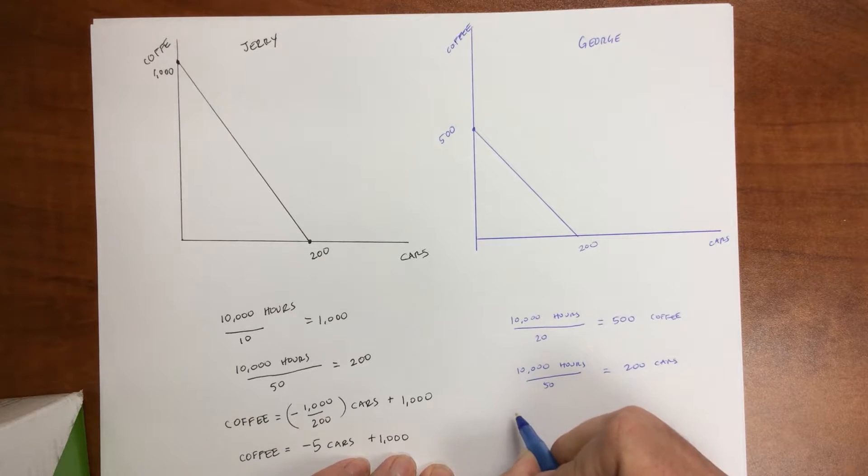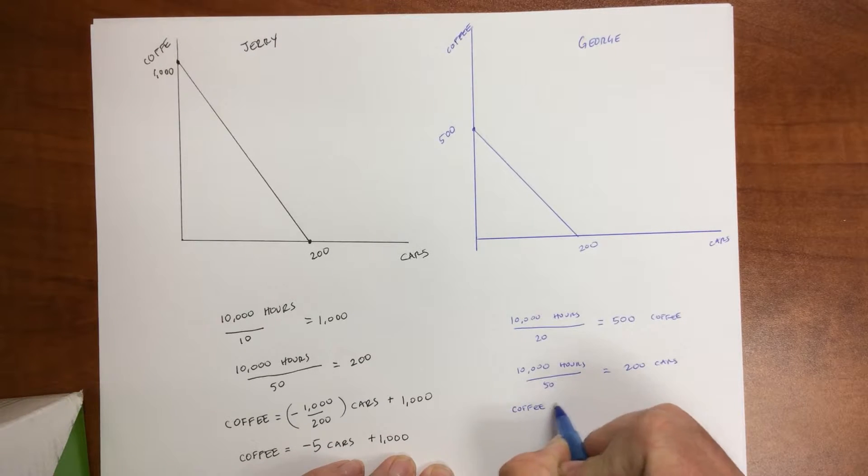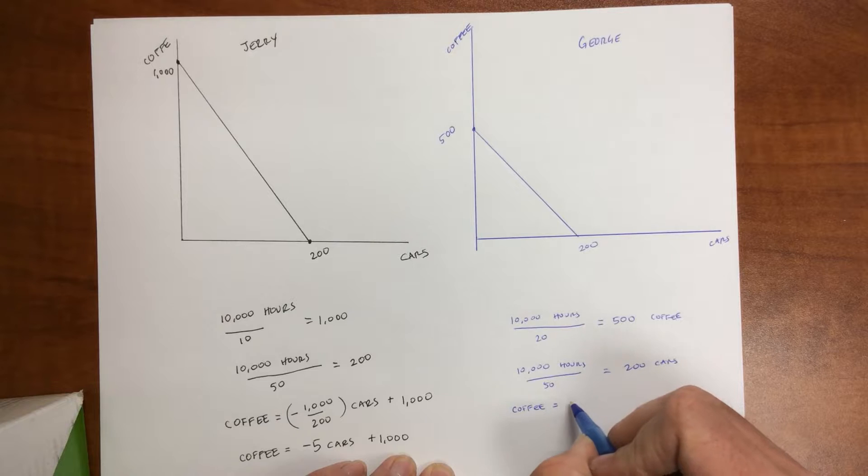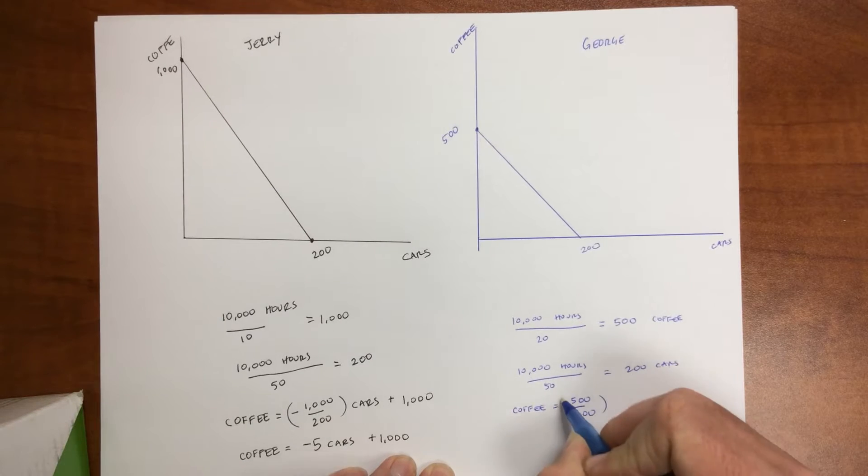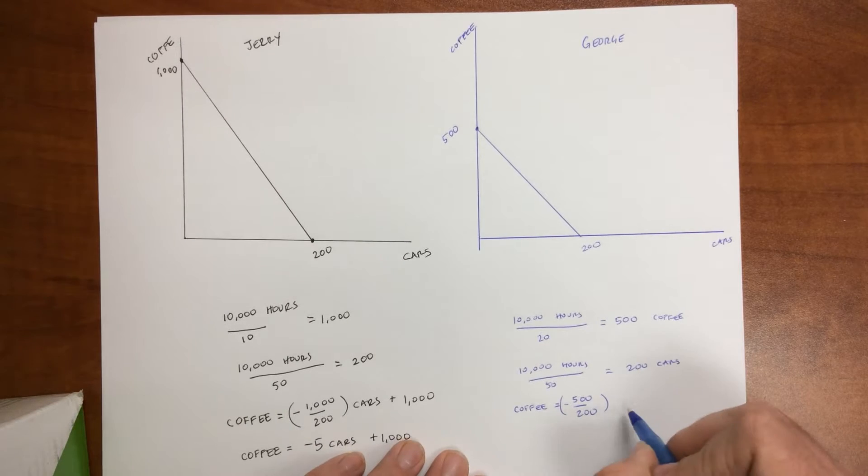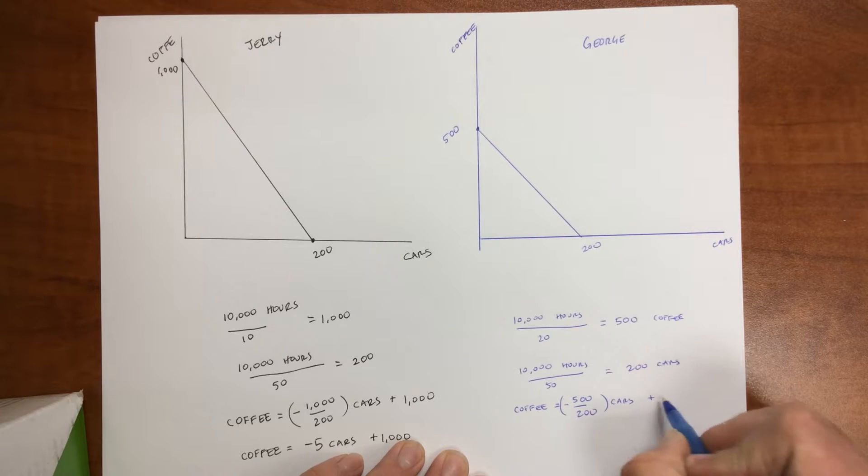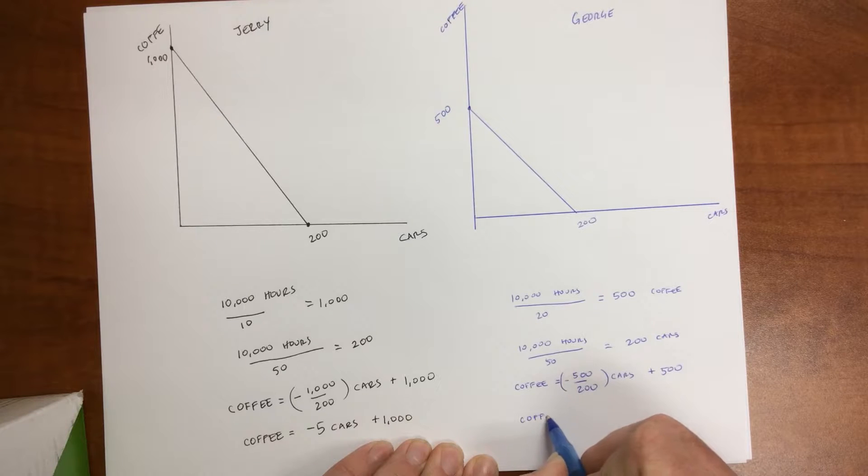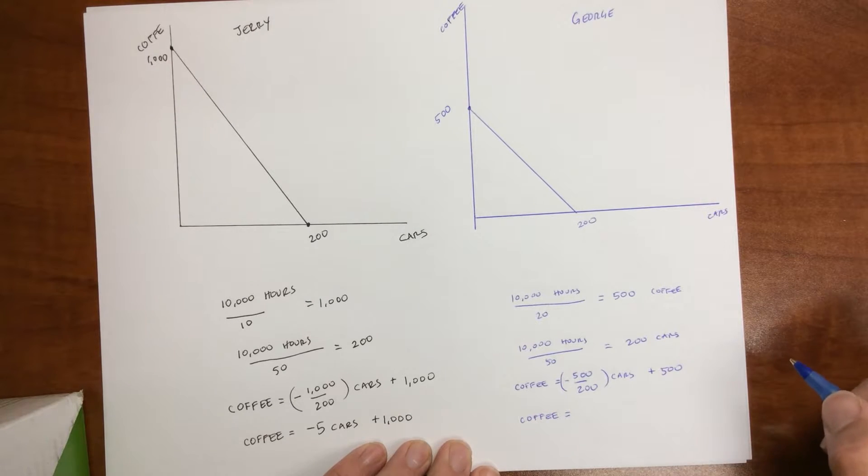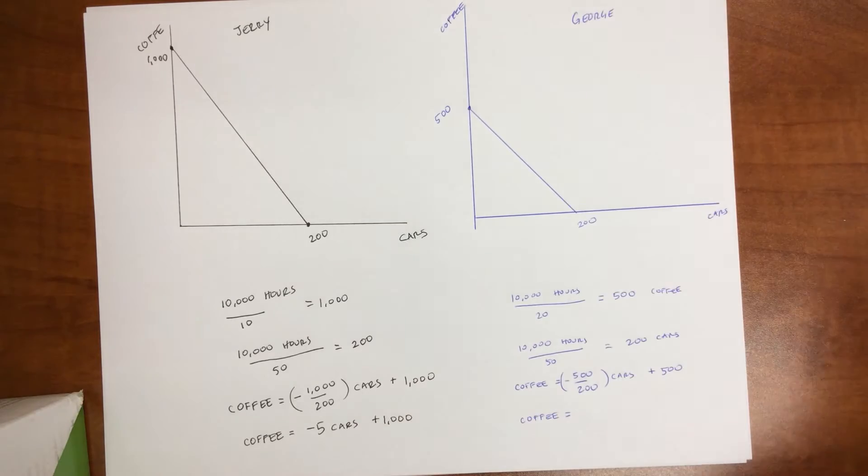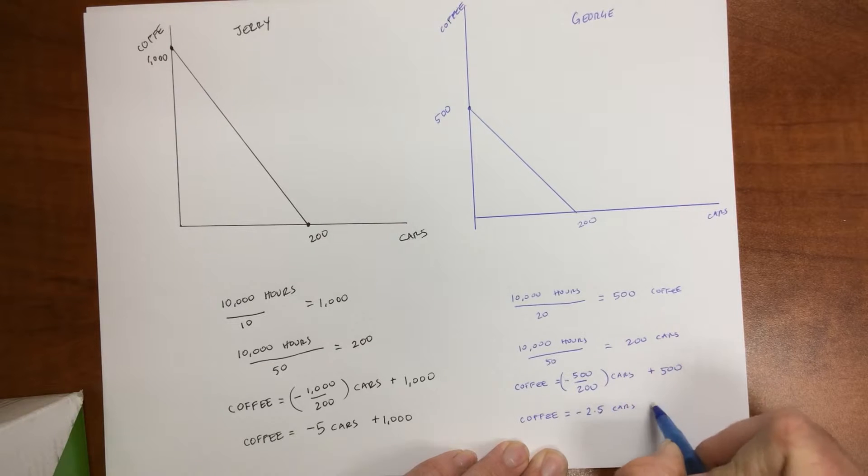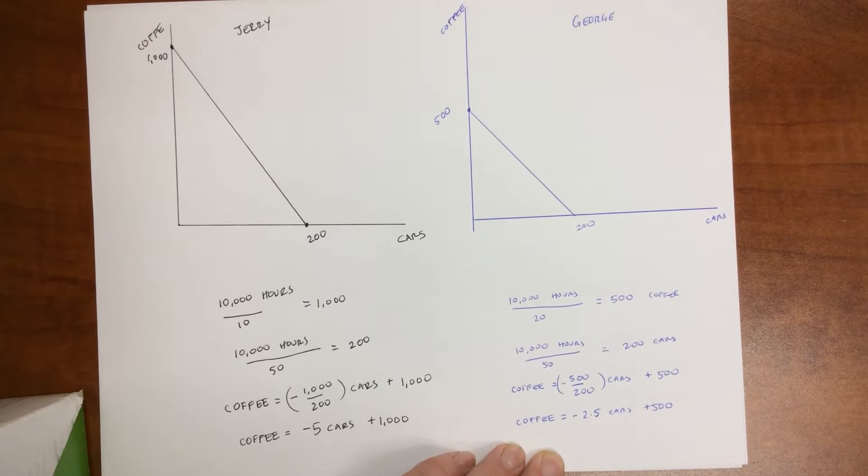To draw that line, we do coffee equals the slope, which is 500 divided by 200, negative out in front because it's decreasing, times cars, plus 500. So to rewrite that, coffee equals... Now I could do 5 halves, but let's go ahead and just divide that. So negative 2.5 cars plus 500. And that's what we have for George.